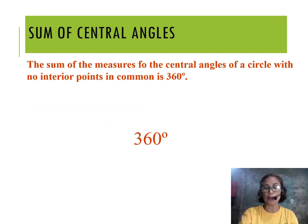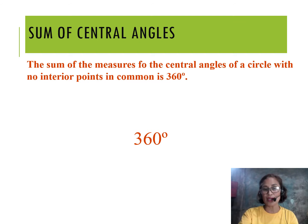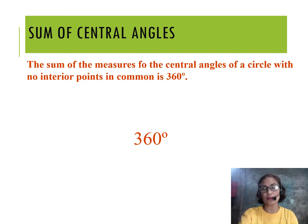Now let's move on to the next theorem, which is the sum of the central angles theorem. It states that the sum of the measures of the central angles of a circle with no interior points in common is 360 degrees — meaning all the central angles inside should sum up to 360 degrees.